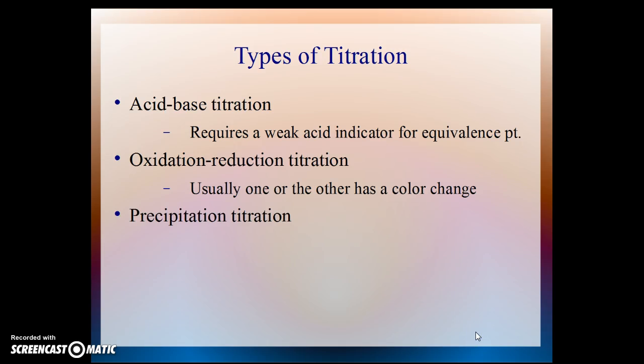The precipitation titration is a third type. Precipitation titrations are difficult, because the equivalence point is hard to spot. If you're creating a precipitate, what you're looking for is the point at which no precipitate is being formed, and that may be a difficult thing to see.